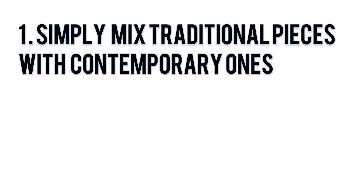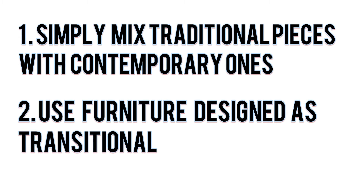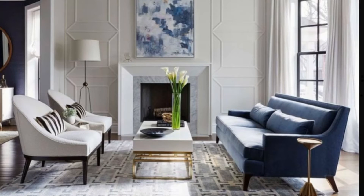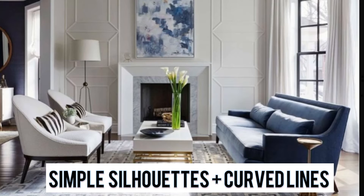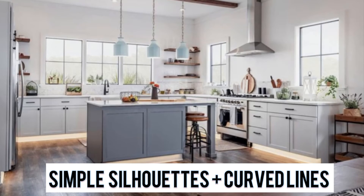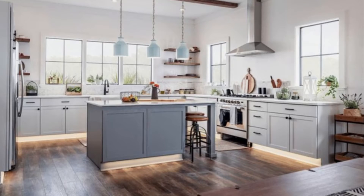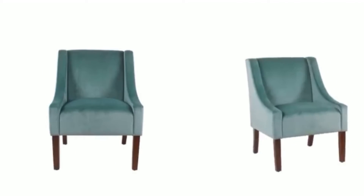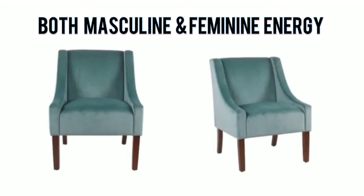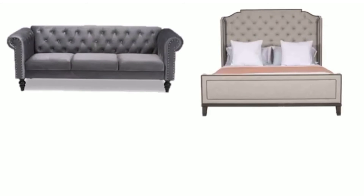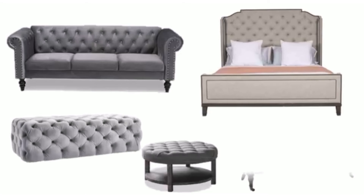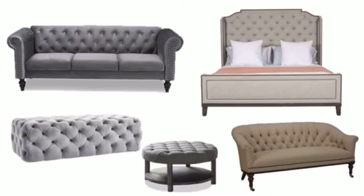Furniture is approached in two ways. The first is to simply mix your traditional pieces with contemporary ones. The second way is to use furniture that has been designed as transitional. Transitional furniture employs simple silhouettes, but you will also encounter curved lines — it is the combination of curved and straight lines giving birth to both masculine and feminine energy. A wing-back chair is the most popular example. Tufting is a common feature, used in transitional furniture mixed with some contemporary pieces.